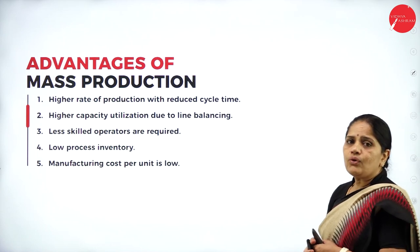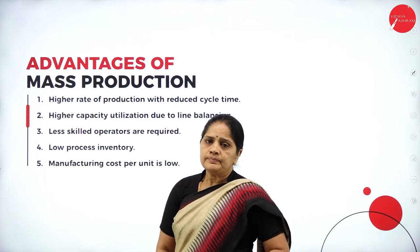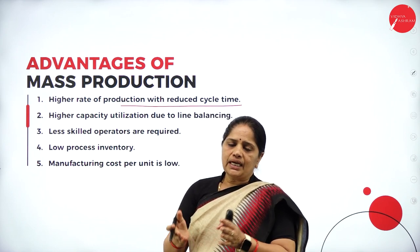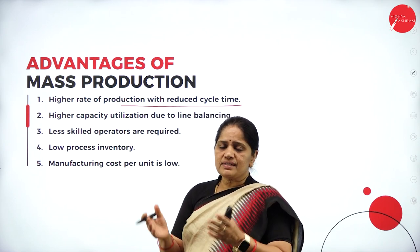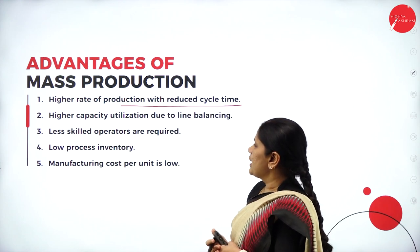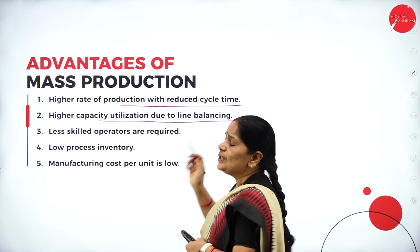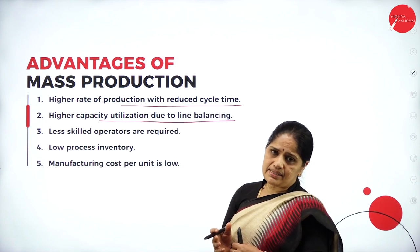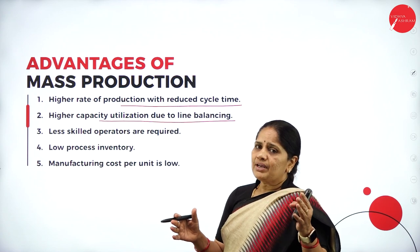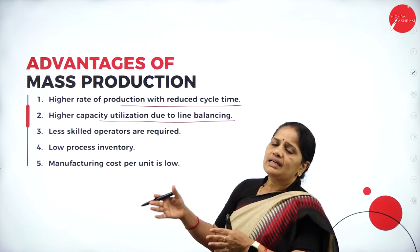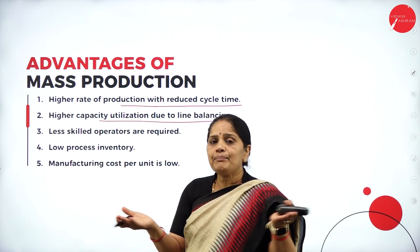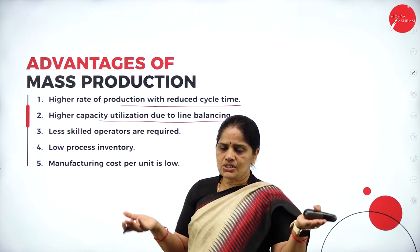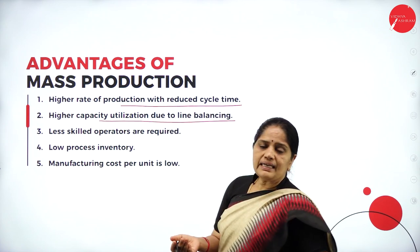The advantages of mass production include: a higher rate of production with reduced cycle time — the time taken to convert raw material into a finished product is very short. Higher capacity utilization due to line balancing — machinery is utilized to its fullest capacity. For example, a nut and bolt must both be balanced in production, requiring high capacity utilization.